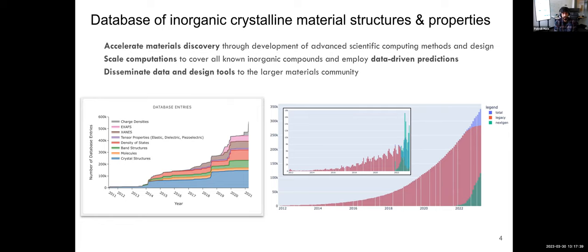To calculate these 150,000 materials and all their properties, we used over 100 million CPU hours. We have 200 terabytes of data. For each material we provide things like density of states, density tensor properties, charge densities, and X-ray absorption spectra. Since 2011 we've kept growing and adding properties to the database.